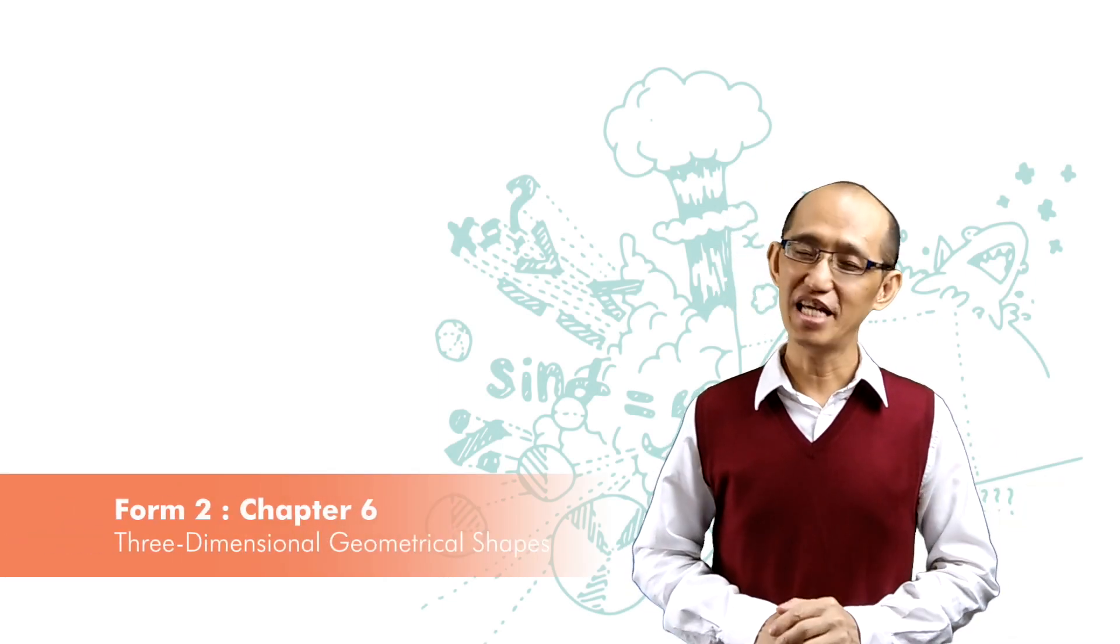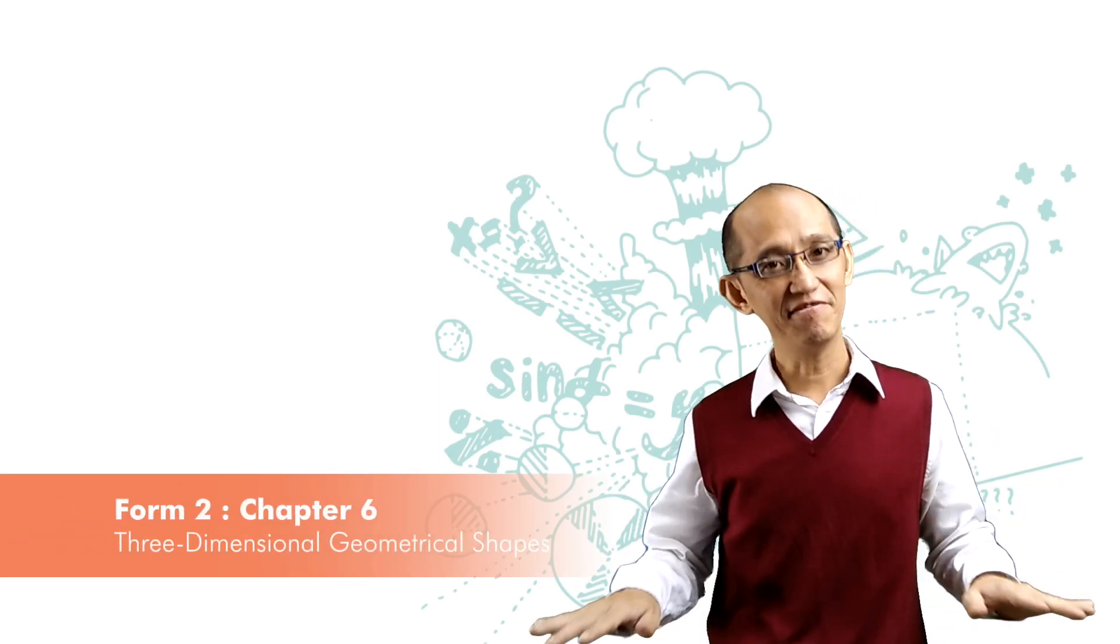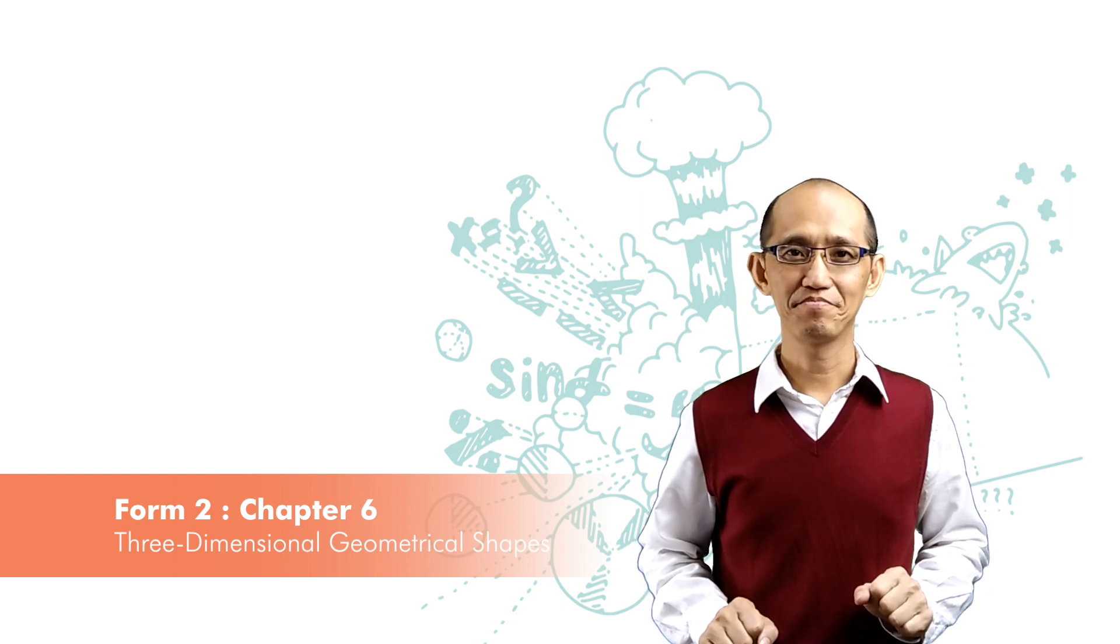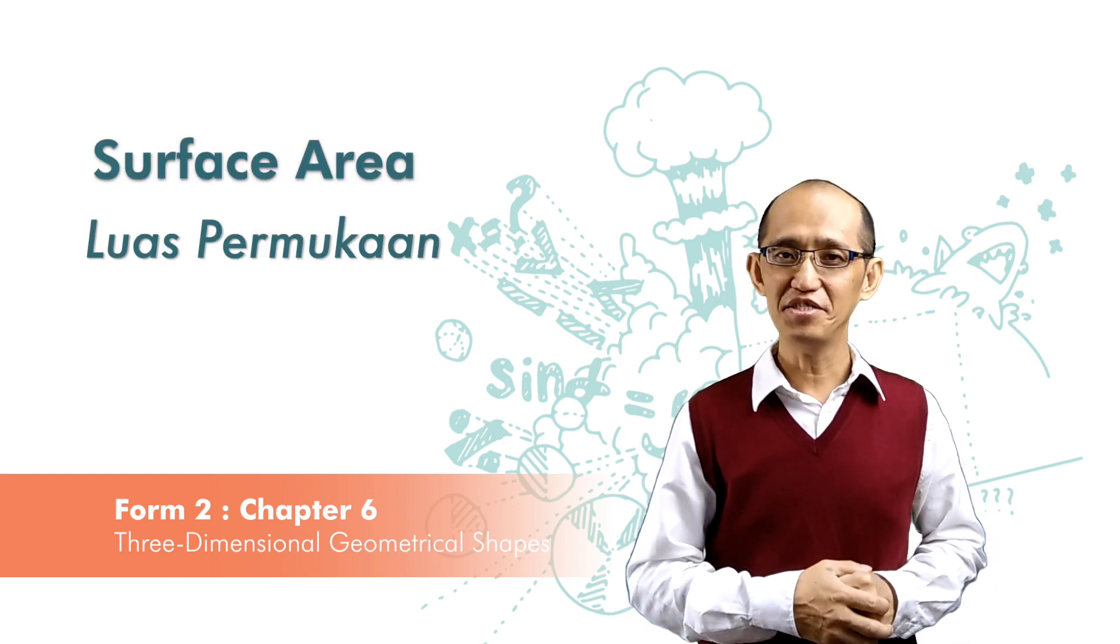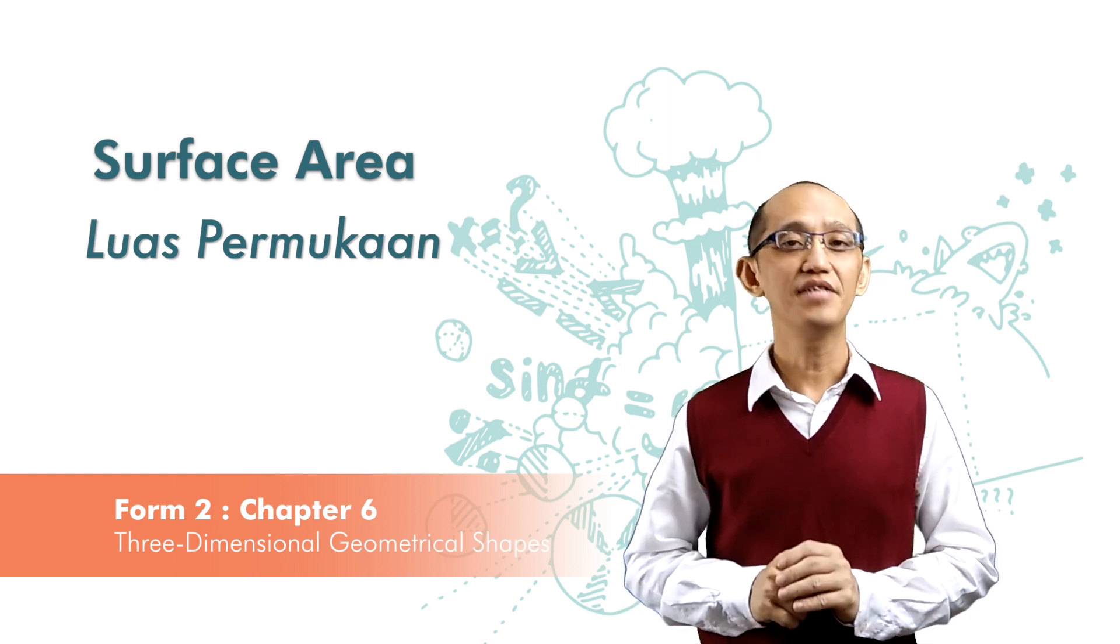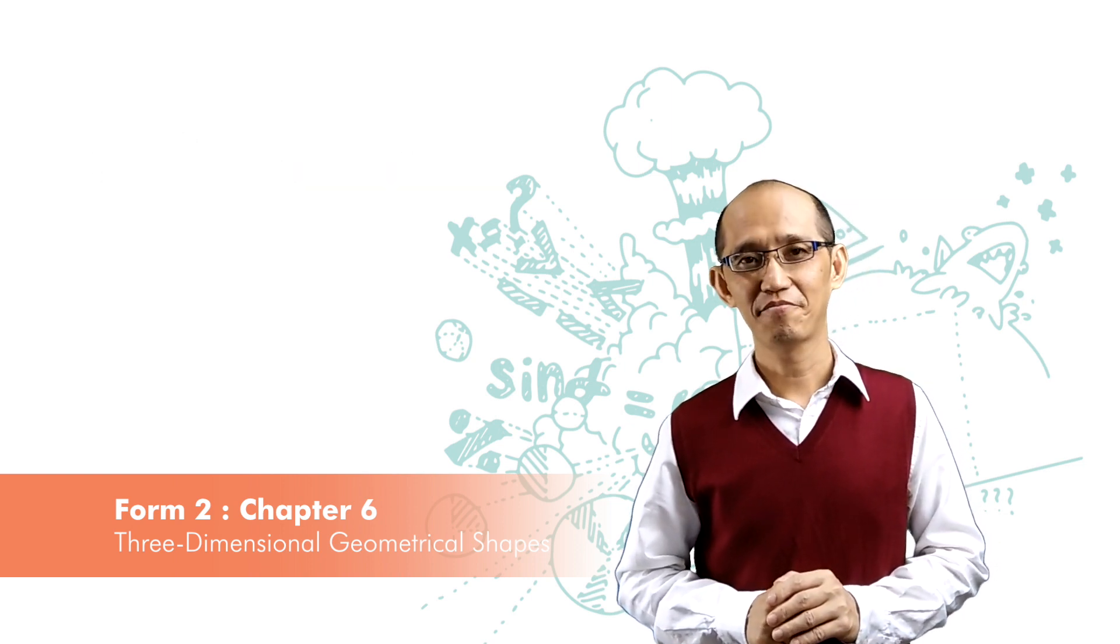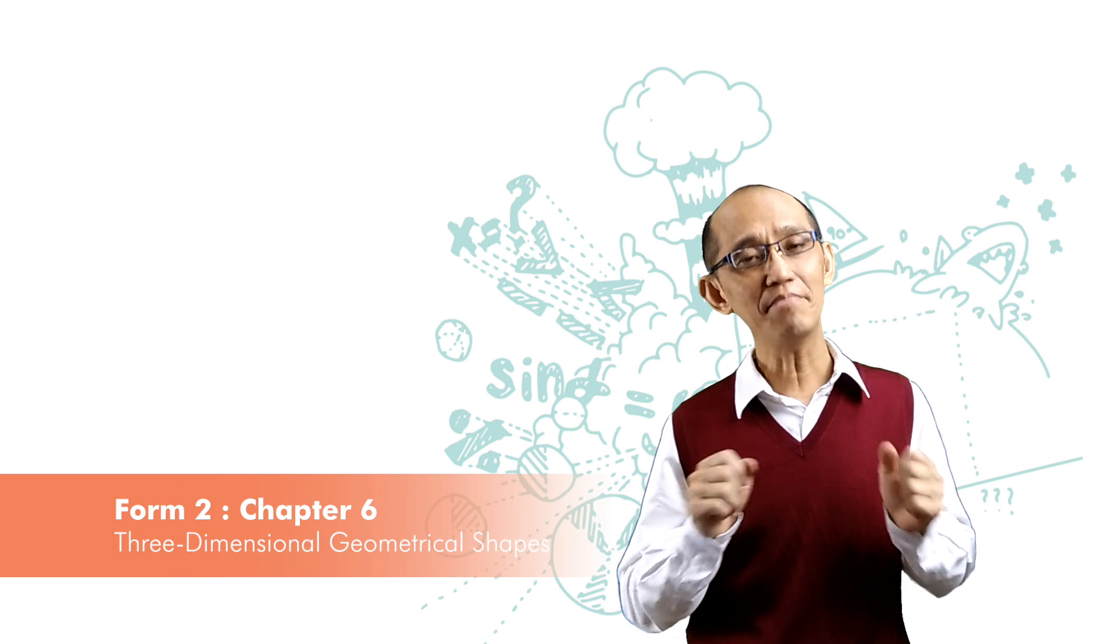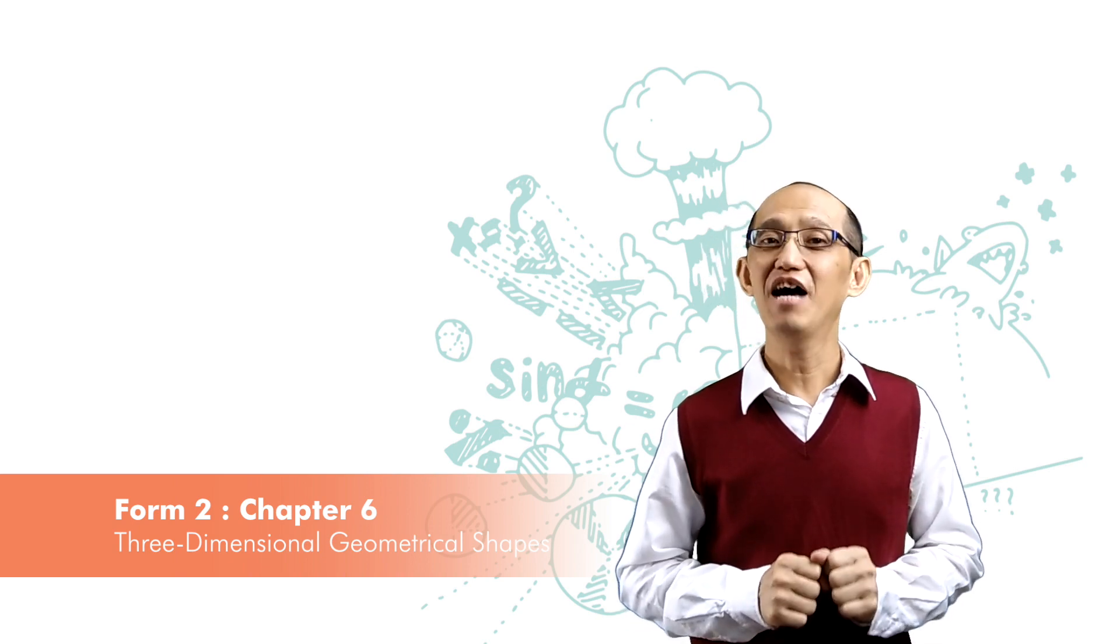All the faces of a three-dimensional shape are laid flat on its net. So to find the surface area of a three-dimensional shape, we simplify the area of its net, or the sum of the area of its faces.